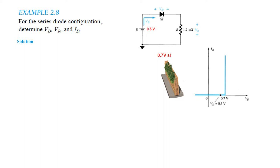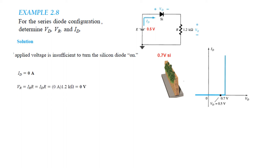Looking at the characteristic diagram, the applied voltage of 0.5V is less than the 0.7V turn-on voltage for silicon. The applied voltage is insufficient to turn the silicon diode on. Therefore, current through the circuit is 0 because the diode is off, so voltage across the resistance is also 0V.